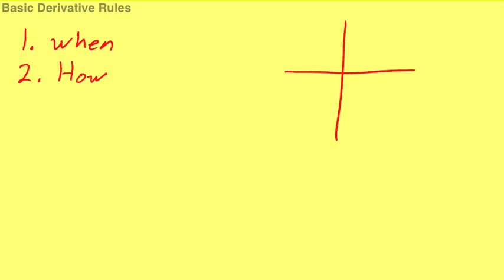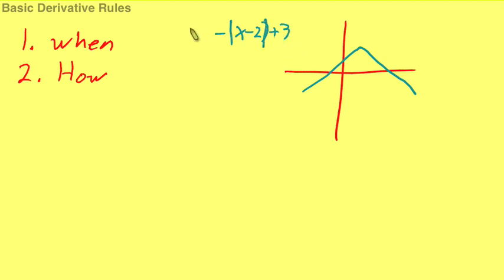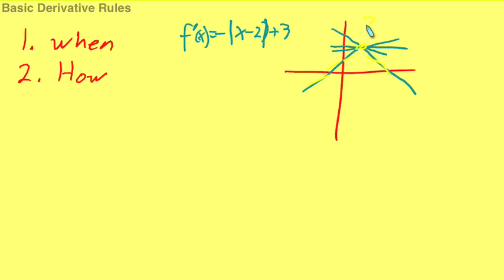If you have a function that has a corner in it — for example, like the absolute value function, something along the lines of negative x minus 2 plus 3 — at that corner, what's the derivative? Is that a tangent line? Is that a tangent line? They're all tangent lines. If you go anywhere else on this function, you always know what the slope would be. But at the top, you don't. So there is no derivative at corners.